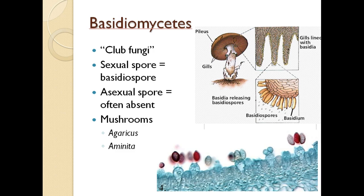The basidiomycetes are the club fungi — you're familiar with them as the mushrooms. Their sexual spore is called a basidiospore, and most of the time they don't have an asexual spore. Agaricus is the mushroom you're familiar with that you put on your pizza or in your salad. Amanita, on the other hand, is a deadly mushroom.